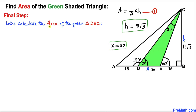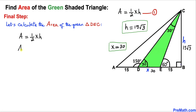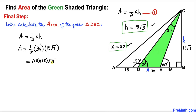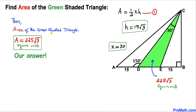Here's our final step. We now calculate the area of the green triangle using equation 1, plugging in X equals 30 and H equals 15 times square root of 3. Area equals one-half times 30 times 15 square root of 3. Simplifying, 15 times 15 gives 225, so the area turns out to be 225 times square root of 3 square units, or approximately 389.7 square units. Thanks for watching and please subscribe to my channel for more exciting videos.